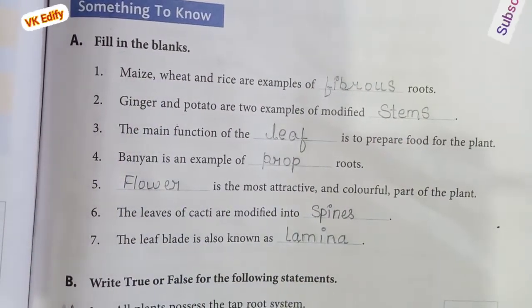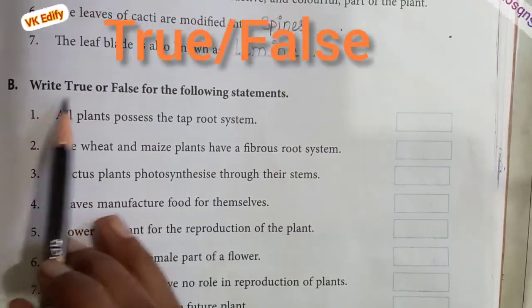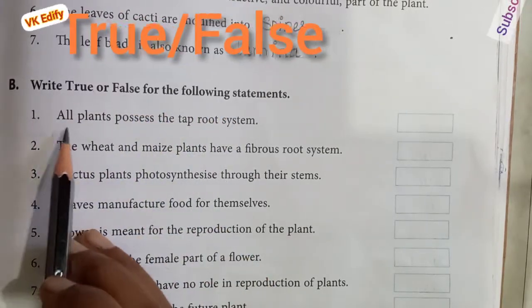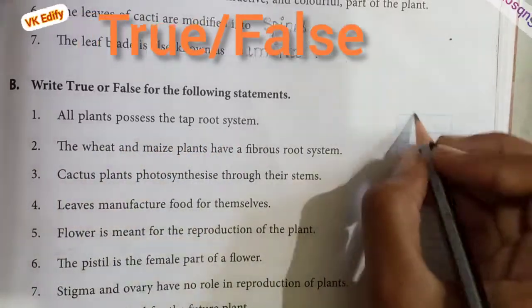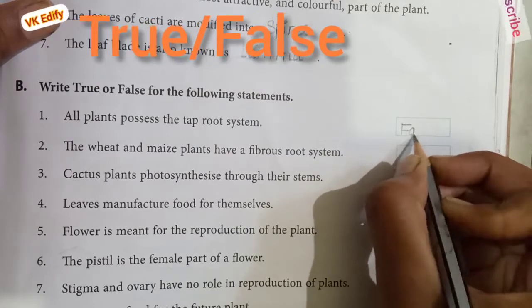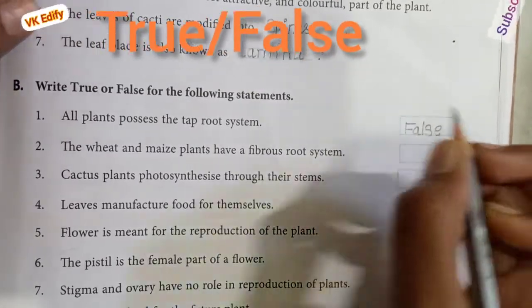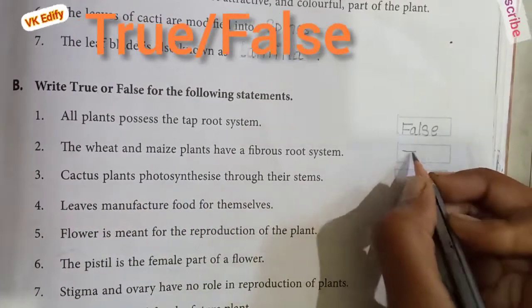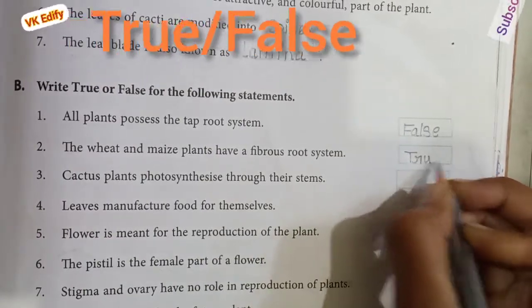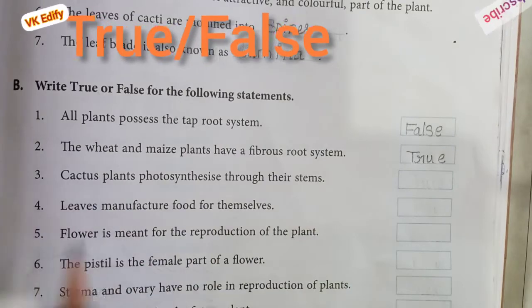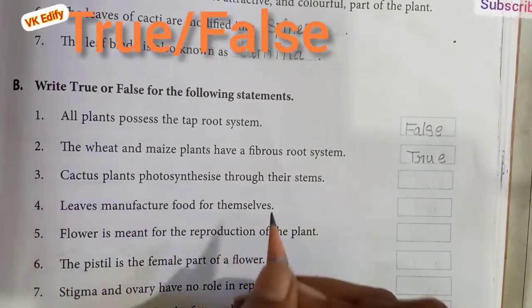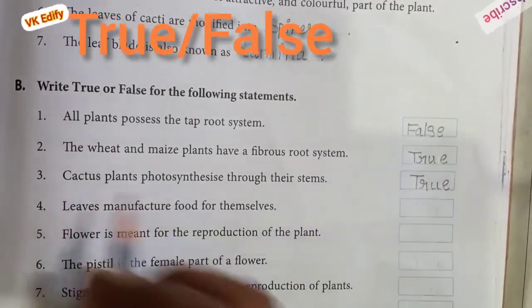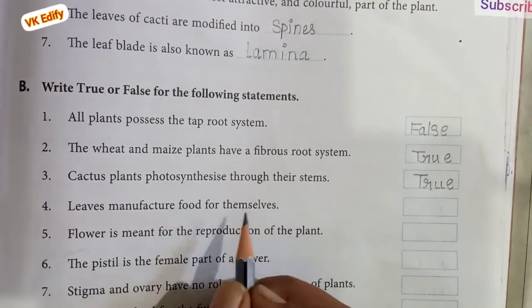Let's do section B: write true or false for the following statements. Question 1: all plants possess the tap root system — False. Second: the wheat and maize plants have a fibrous root system — True. Third: cactus plants photosynthesise through their stems — True. Fourth: leaves manufacture food for themselves — False.